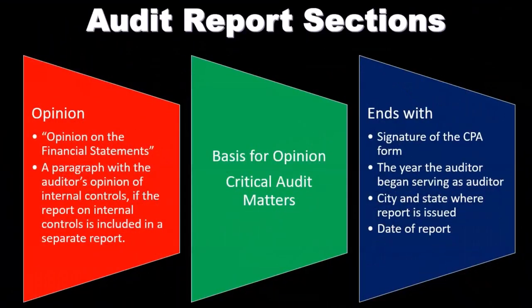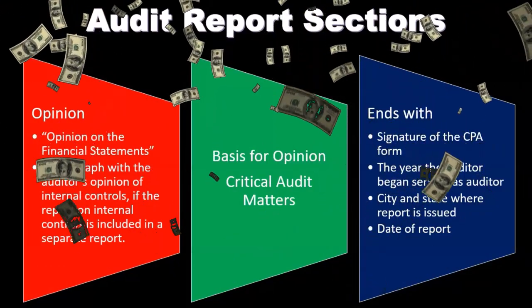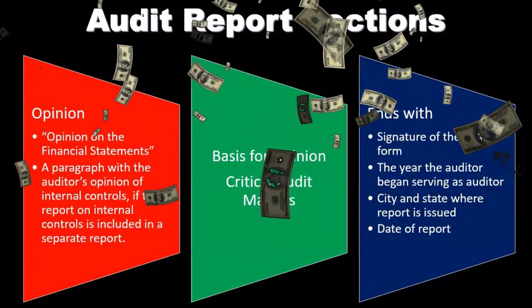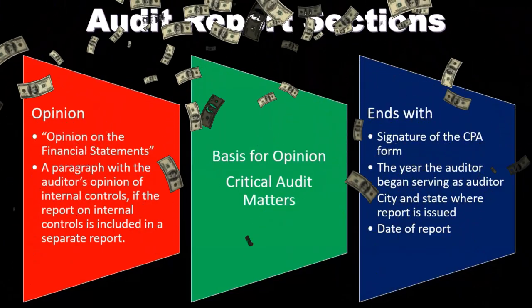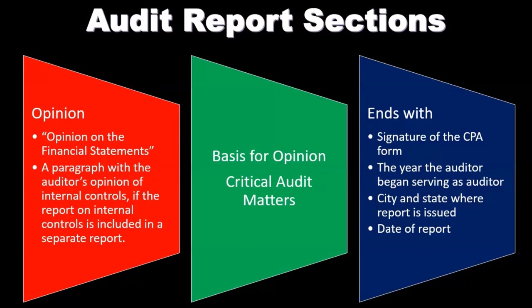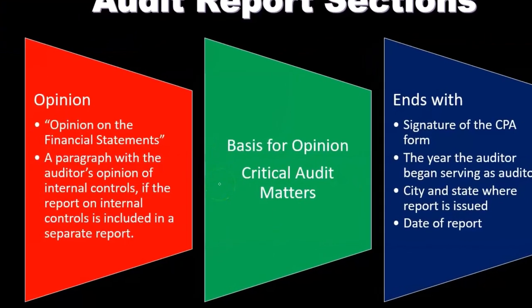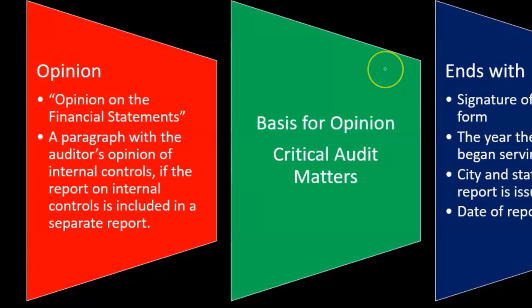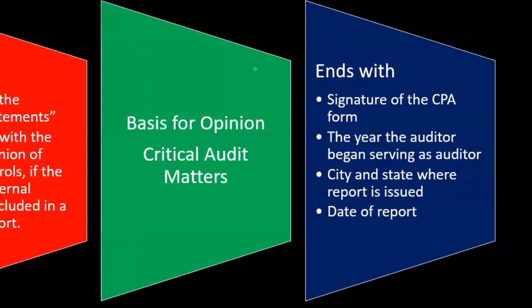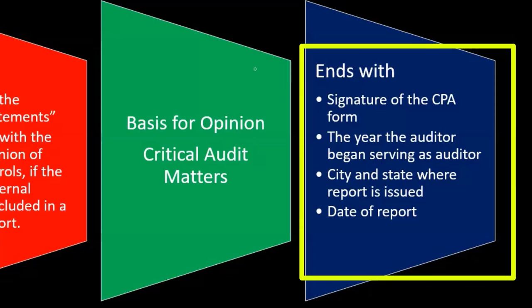Audit report sections include the opinion on the financial statements, and a paragraph on the auditor's opinion of internal controls if a report on internal controls is included. We'll include the basis for the opinion, the critical audit matters, and then it ends with the signature of the CPA firm, the year the auditor began serving, the city and state where the report is issued, and the date of the report.